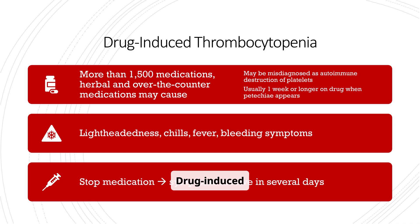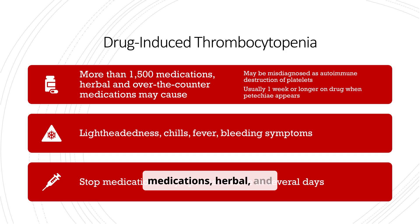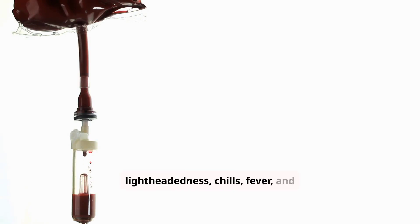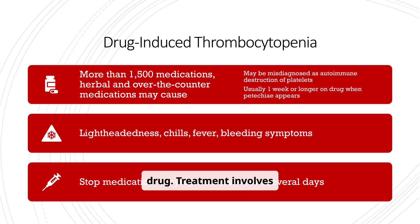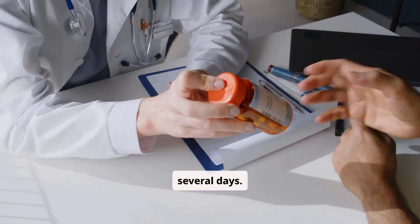Drug-induced thrombocytopenia can be caused by over 1,500 medications, including herbal and over-the-counter medications. It may be misdiagnosed as autoimmune destruction of platelets. Symptoms include lightheadedness, chills, fever, and bleeding, and usually appear after a week or longer on the drug. Treatment involves stopping the medication, which should resolve symptoms in several days.